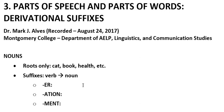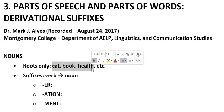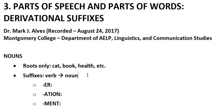To start with nouns, there are nouns with roots only — no affixes, nothing after the word: cat, book, health, and so on. But there are many nouns in English which we can identify as nouns due to suffixes on them, that is one or more syllables after the root of the word. There are many types but we'll look at a few.